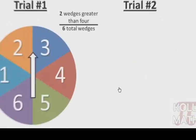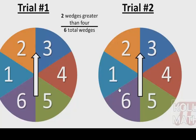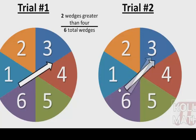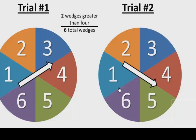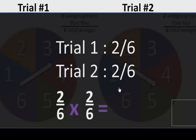Let's go back to our spinner problem. The spinner used in the second trial is exactly the same as the spinner used in the first trial. No matter how many times you spin it, it will always have the same number of outcomes. Two wedges greater than four out of six total wedges is the same probability for the second trial. We take the two fractions and multiply them together. Two over six times two over six gives us four over 36, which we can reduce to one over nine.